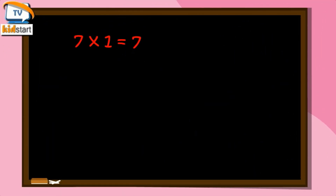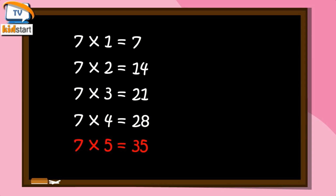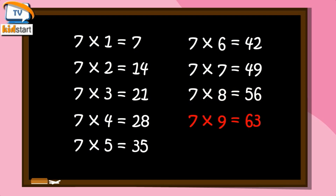Seven ones are seven. Seven twos are fourteen. Seven threes are twenty-one. Seven fours are twenty-eight. Seven fives are thirty-five. Seven sixes are forty-two. Seven sevens are forty-nine. Seven eights are fifty-six. Seven nines are sixty-three. Seven tens are seventy.